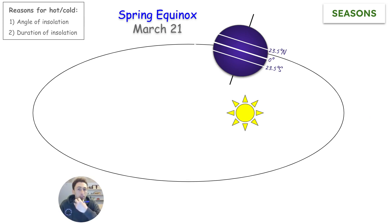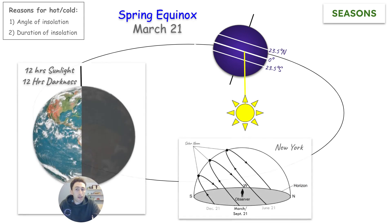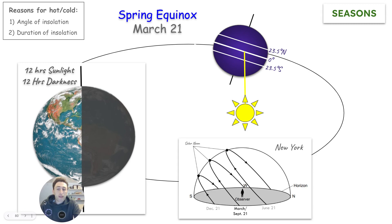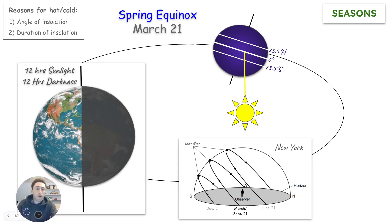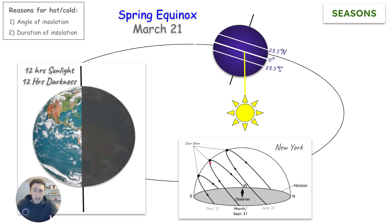Three months after December 21st, you have March 21st and the first day of spring — called the spring equinox. The sun's rays hit directly at the equator. It's called the equinox because all places on Earth will have 12 hours of sunlight and 12 hours of darkness. It's going to be warmer during the spring equinox than during the winter solstice for us in New York, because we get more direct sun rays hitting at the equator and we're facing a little more towards the sun. During this time, the sun will rise due east and set due west, rising further up in the daytime sky.